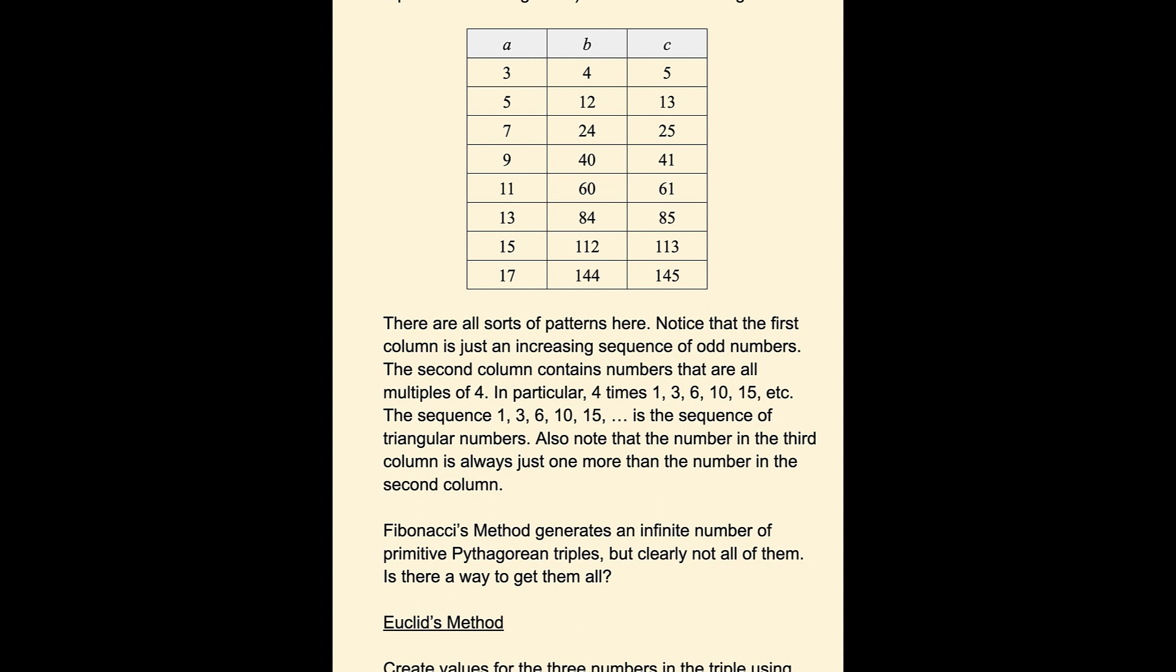So Fibonacci's method does generate an infinite number of primitive Pythagorean triples, but clearly not all of them, since there are some triples, like 8, 15, 17, where the hypotenuse is actually 2 more than the longest leg. So let's take a look at another method.